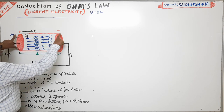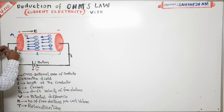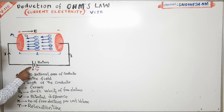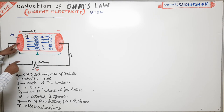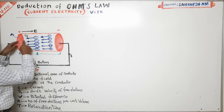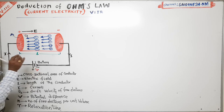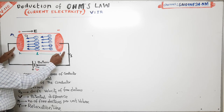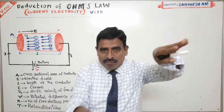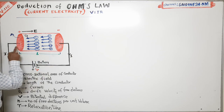This metallic conductor is connected to a battery. This battery creates a potential difference between the ends of the conductor. The positive terminal of the battery is connected to one end, and the negative terminal is connected to the other end. Between these two ends, an electric field is created due to the potential difference supplied by the battery.